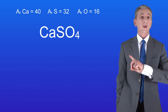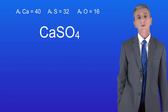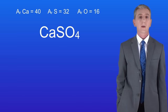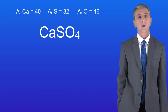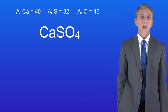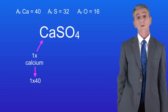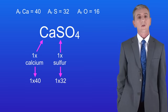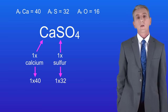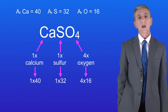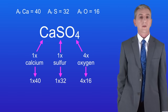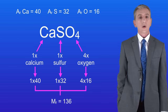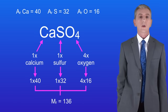This is the formula for calcium sulfate. I'd like you to pause the video now and work out the relative formula mass for this compound. We've got one atom of calcium and calcium's got a relative atomic mass of 40. We've got one atom of sulfur and sulfur's got a relative atomic mass of 32. Finally we've got four atoms of oxygen and oxygen's got a relative atomic mass of 16. Adding all of these together gives us a relative formula mass of 136.